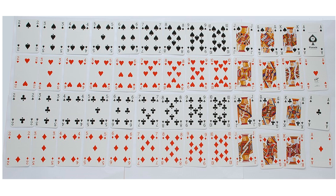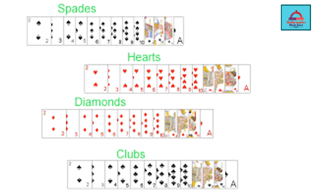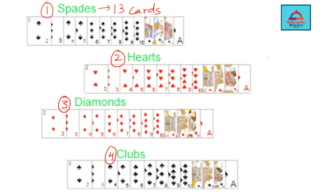Looking at the pack of cards, there are 4 sets of 13 cards each. The first set is called spades — there are 13 cards here. Among these 13 cards you see the number cards, as well as king, queen, jack, and ace. Similarly, you have hearts shown by the symbol of a heart. There are different symbols for spades, hearts, diamonds, and clubs — each with 13 cards. So 13 multiplied by 4 gives 52 cards in total.